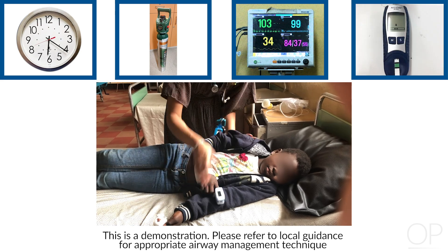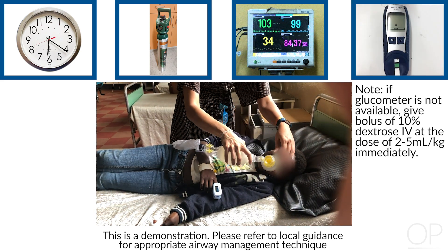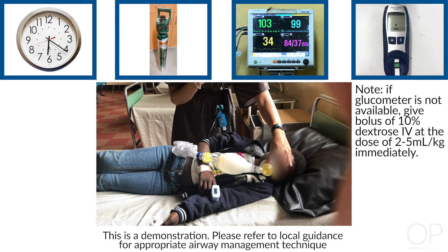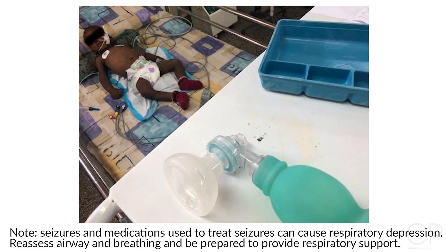Obtain a finger stick blood glucose, as this is a reversible cause of seizure. But if a glucometer is not readily available, you should not wait — give a bolus of 10% dextrose IV at the dose of 2 to 5 milliliters per kilogram. You should then consider starting a maintenance normal saline. Remember that both seizures and the medications used to stop seizures can cause respiratory depression, so reassess the patient's airway and breathing frequently and be prepared to provide respiratory support as needed.